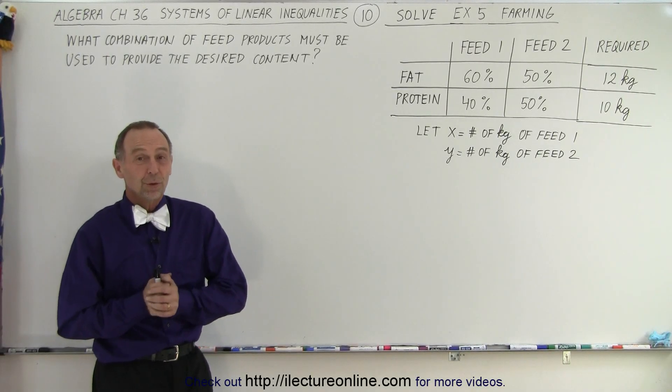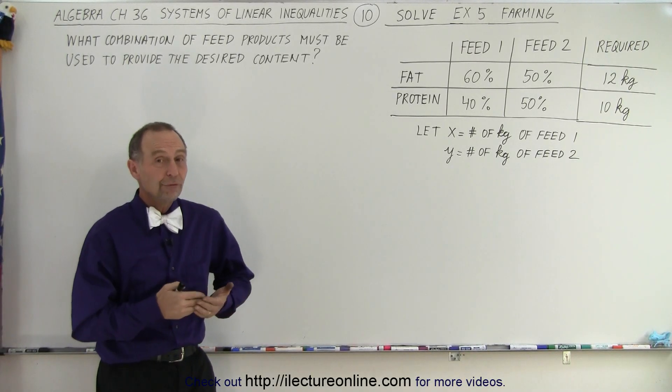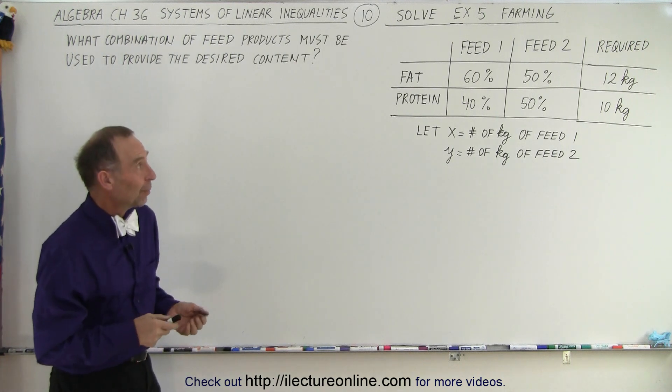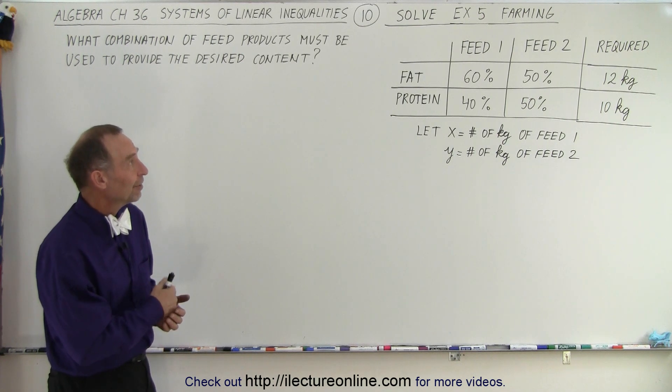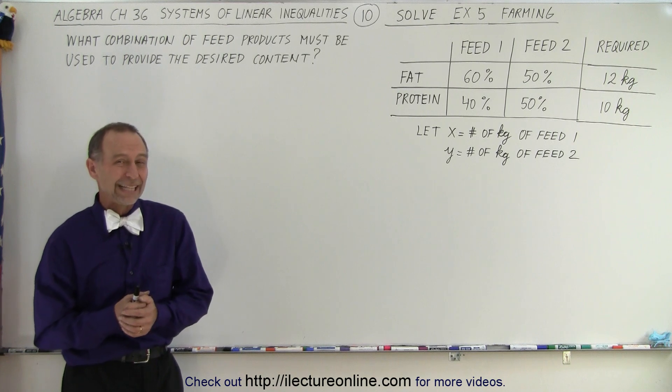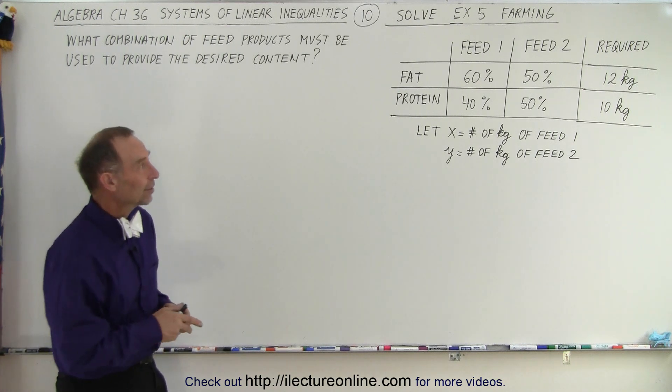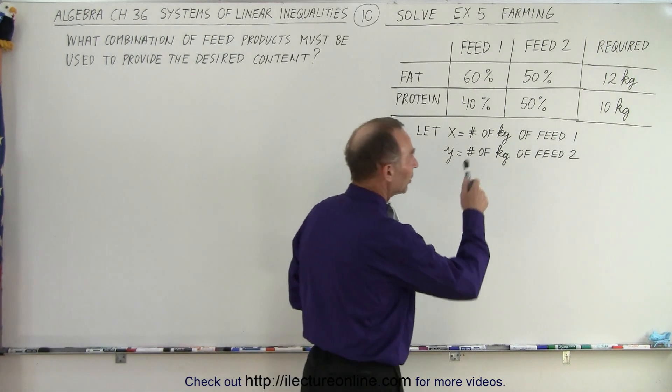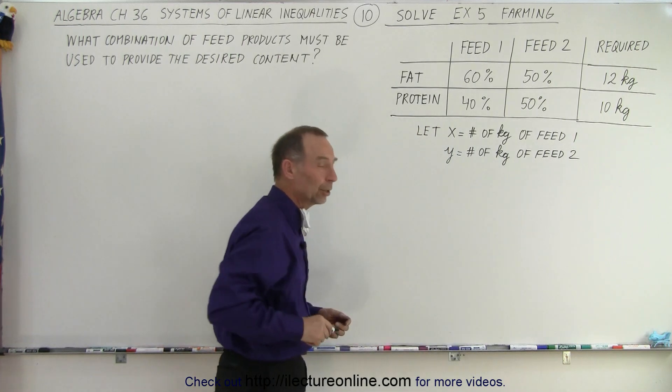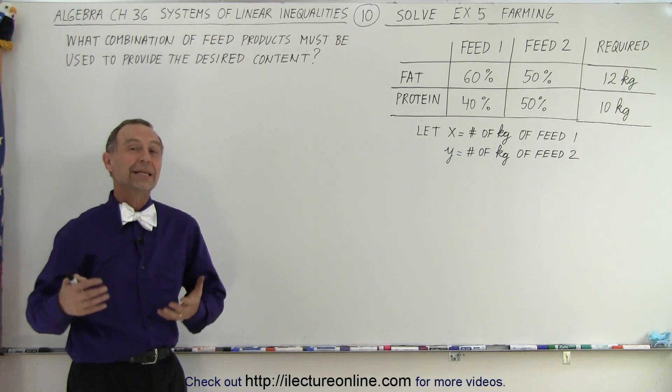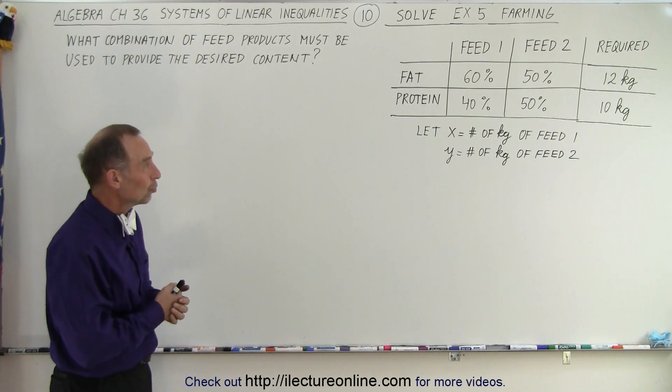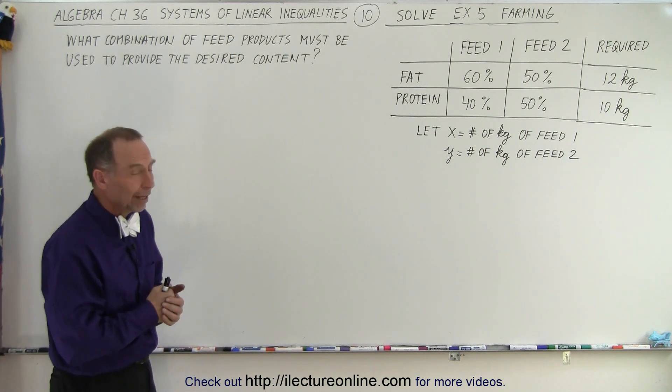Welcome to iLectraOnline. We can also apply these techniques to farming. For example, let's say we have two different kinds of feed. Feed one provides 60% fat and 40% protein, and feed two provides 50% fat and 50% protein. And we want to put something together that provides 12 kilograms of fat and 10 kilograms of protein. And so the idea would be what kind of combinations should we use to feed from feed one and from feed two.